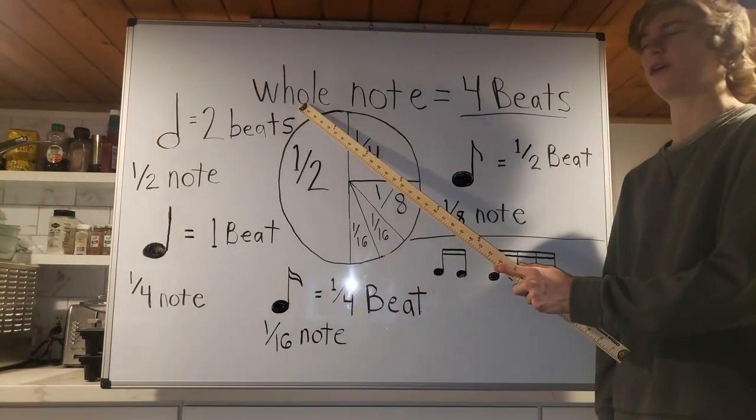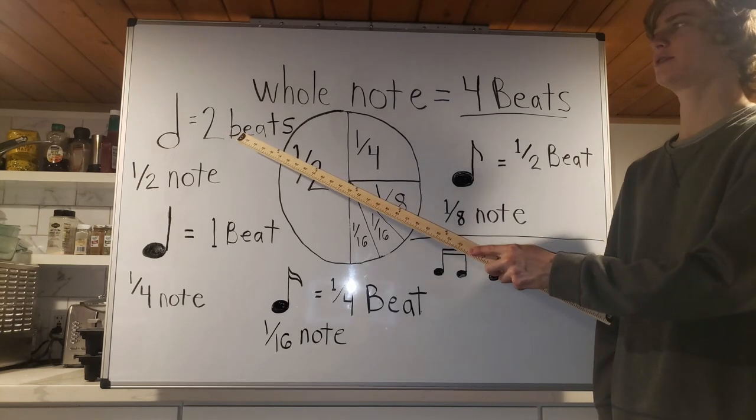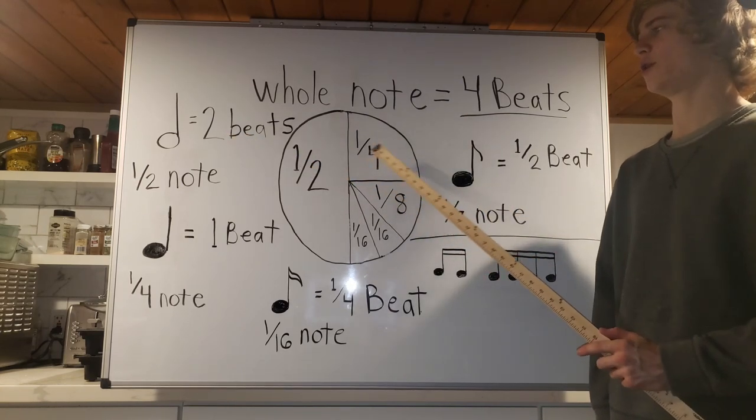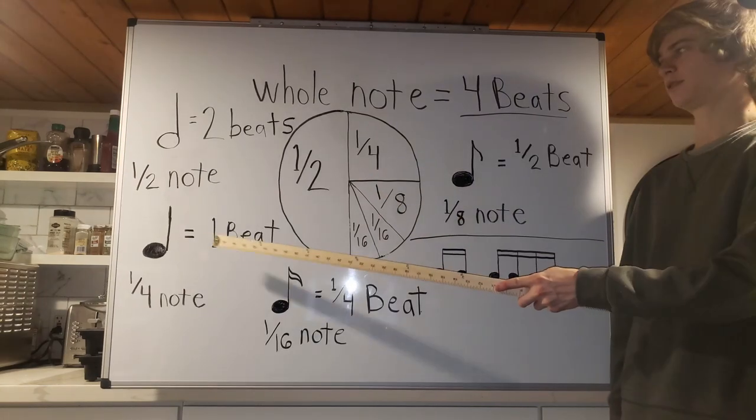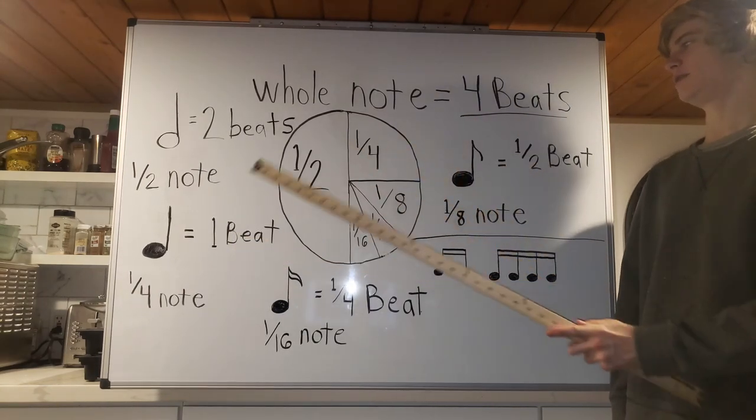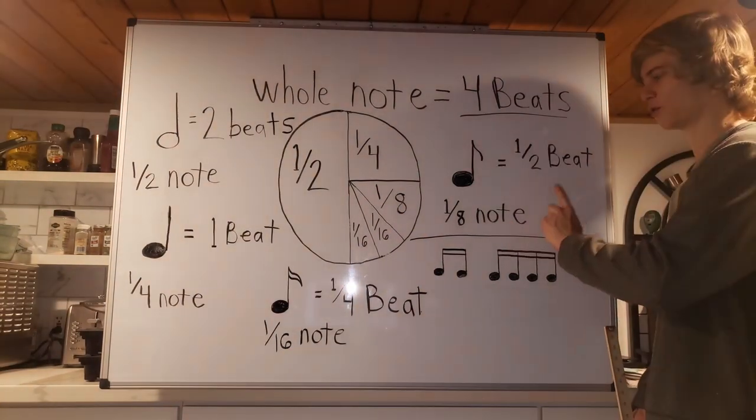So to quickly go over it, whole note is four beats. Cut in half is a half note, which is two beats. Cut in half is a quarter note, which is one beat. Cut in half again, eighth note, half a beat. Cut in half the final time, a sixteenth note, a quarter beat.